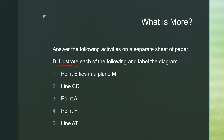For letter B, illustrate each of the following and label the diagram. For example, number 1: point B lies in a plane M — draw plane M with point B on it. Number 2: draw line CD with two arrowheads extending indefinitely. Number 3: point A. Number 4: point F. Number 5: line AT, named using the two capital letters.